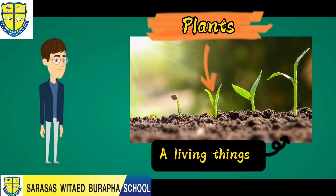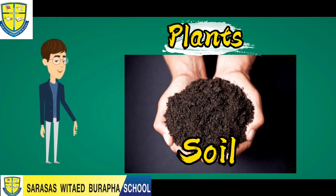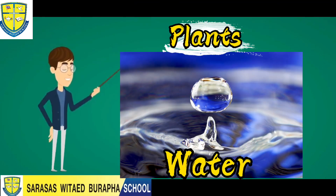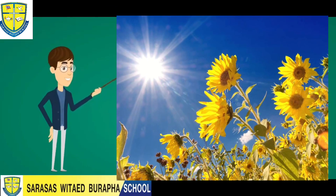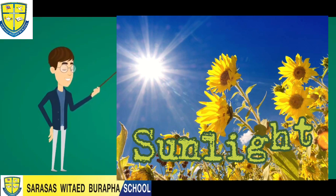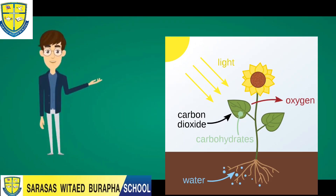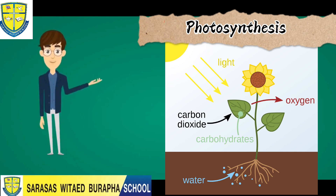Just like other living things, plants need soil, air, water, and food to live. Plants also need sunlight to make their own food, and this process is what we call photosynthesis.